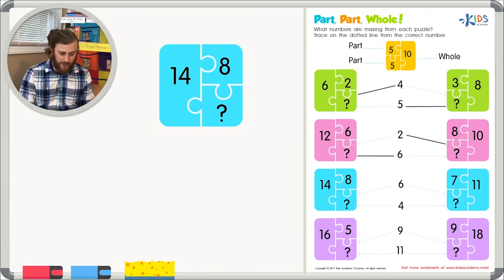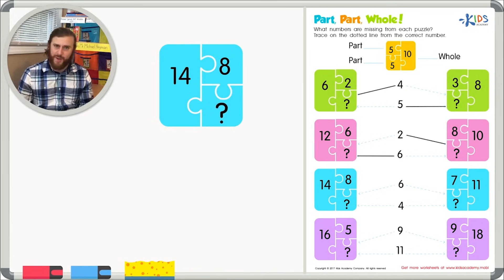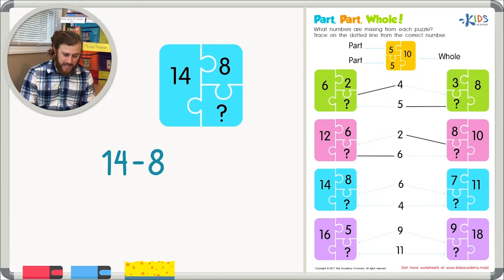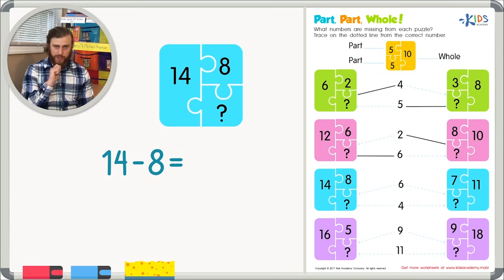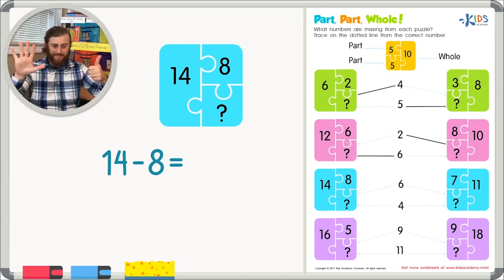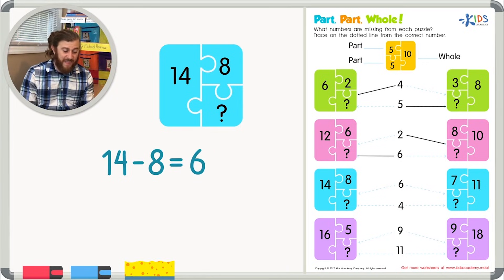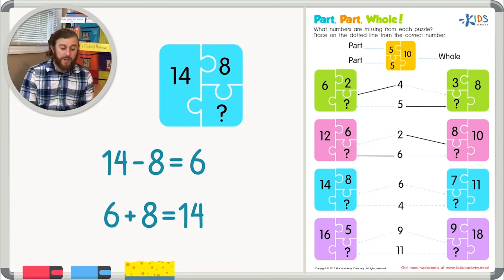We have 14 as our whole number and eight as one of the parts. Let's use subtraction to find the missing part. 14 minus eight is a little bit more tricky, so let's count backwards: 14, 13, 12, 11, 10, 9, 8. So I think the missing number is six. Let's add six plus eight — that does give us 14. So we know the missing part is six. Let's trace on the dotted line to six.